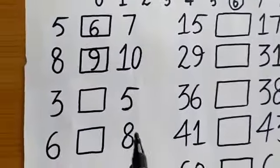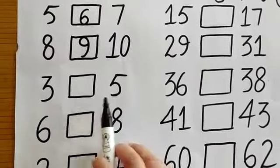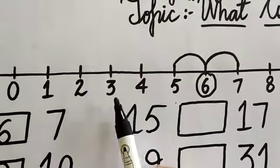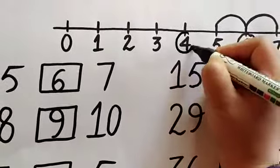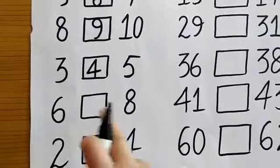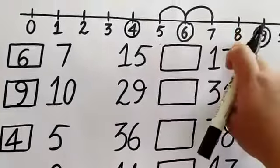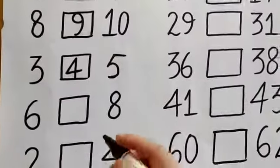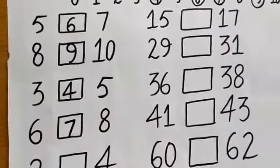Now the next one is number 3 and number 5. Which number will come in between 3 and 5? Yes, between 3 and 5 is number 4. Now the next numbers are 6 and 8. Which number will come in between 6 and 8? Number 7. So number 7 will come in between 6 and 8. I will write 7 here.